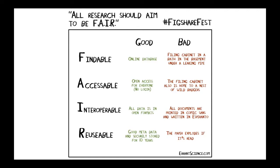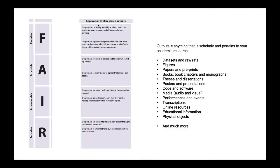In the application to all research outputs, data is anything affiliated to your academic research. That means datasets and raw data like Excel spreadsheets, figures like graphs and charts, papers and preprints — we're seeing a lot of preprints now especially because of COVID — books, book chapters, monographs, PhD theses and dissertations and essays, posters and presentations from conferences or internal workshops, and code and software.